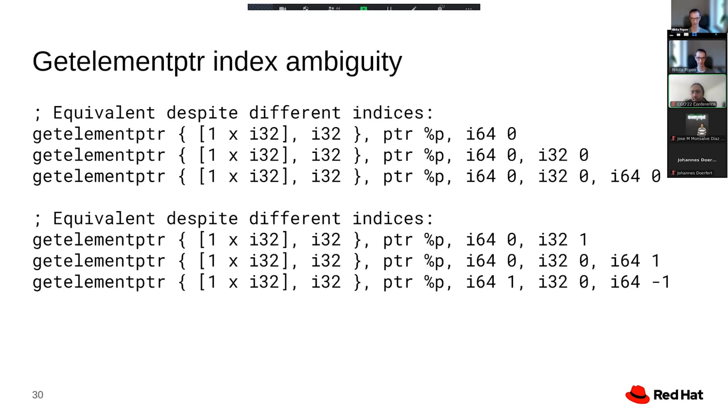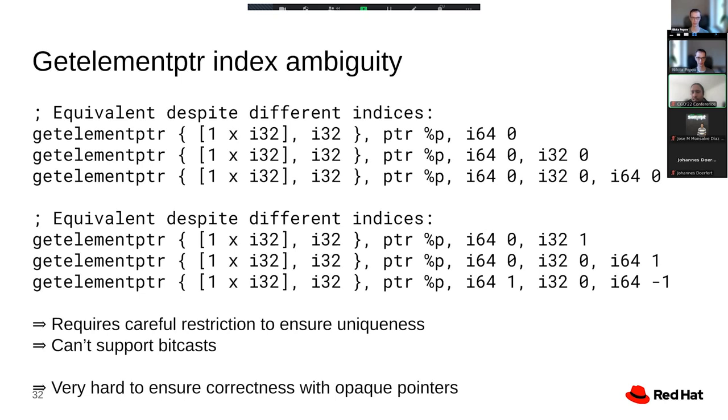And the last one does so by first going to the end of the struct and then going backwards one element inside the array. All of those are perfectly legal in LLVM. We call that notional over-indexing and it's legal even for inbounds get element pointer instructions. The end result is that to work on get element pointer indexes, you have to be careful to restrict them. And it's essentially impossible to support bit casts in that case. And if you don't support bit casts, you also can't support opaque pointers because opaque pointers make bit casts implicit.